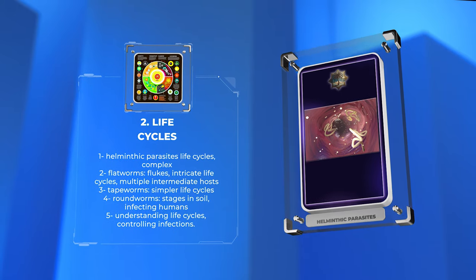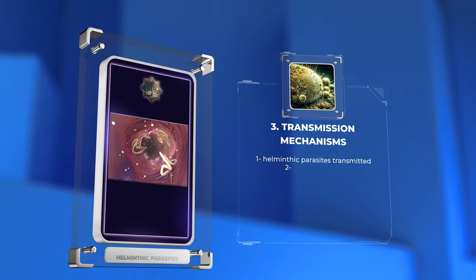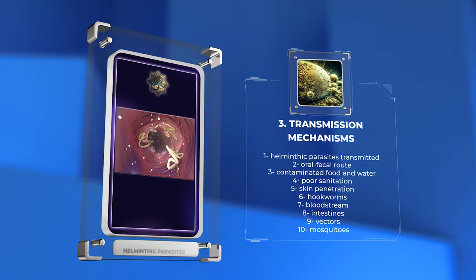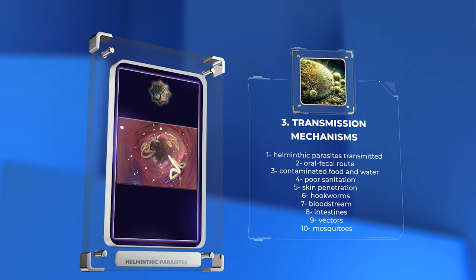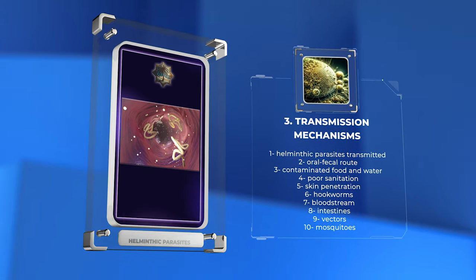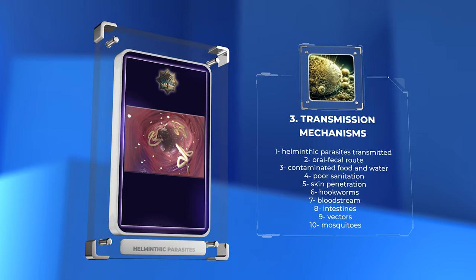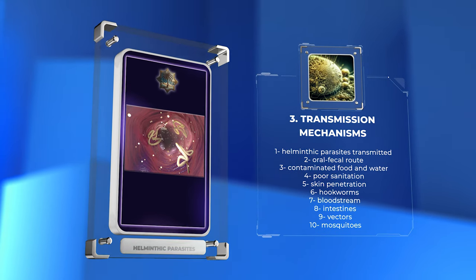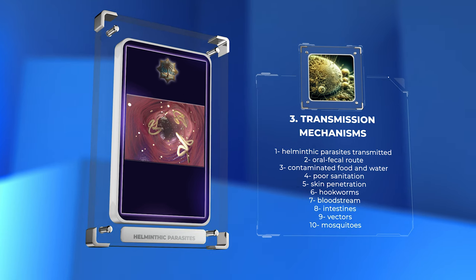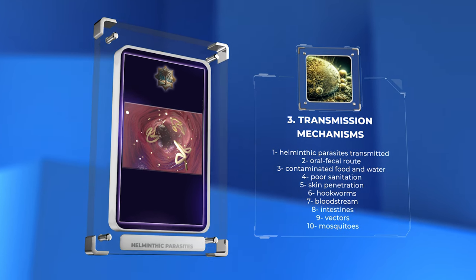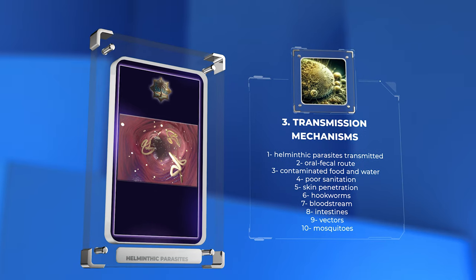This section covers the different ways helminthic parasites are transmitted. The oral-fecal route is the most common, where contaminated food and water sources become infested with helminth eggs and larvae, and poor sanitation facilitates this mode. Another method is skin penetration — hookworms, for example, can burrow through the skin, enter the bloodstream, and eventually reach the intestines.